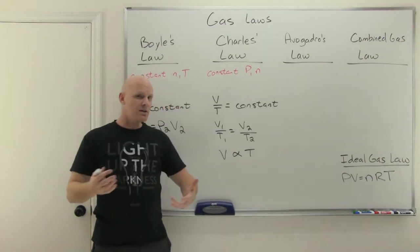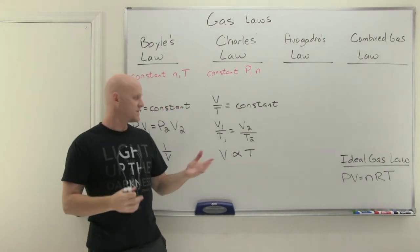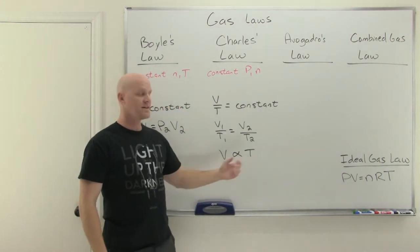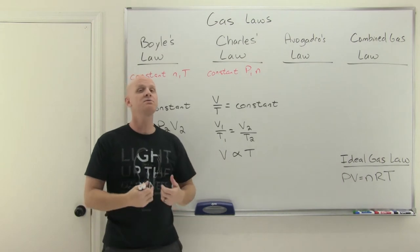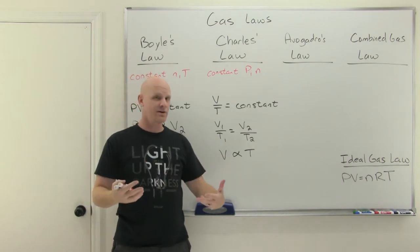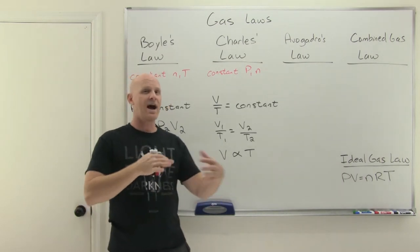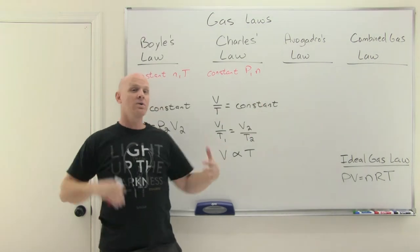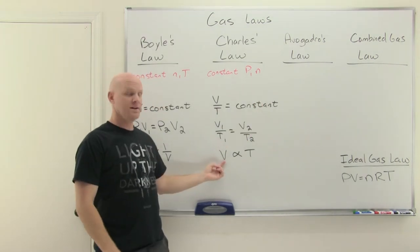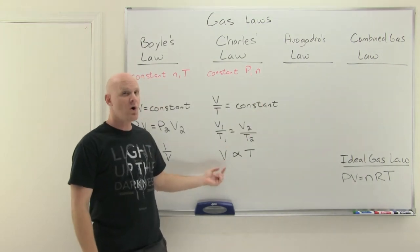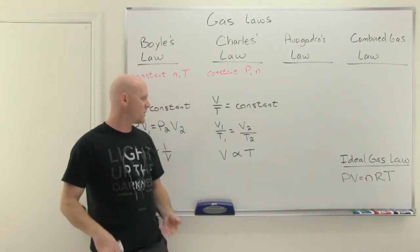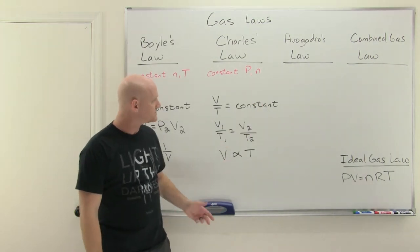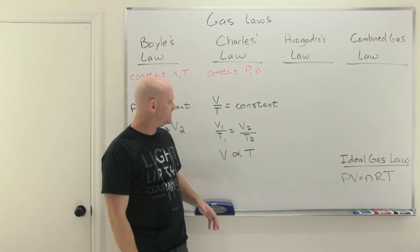At a molecular level, gas molecules move faster as the temperature goes up. As they move faster, they spread out, leading to a larger volume. That's kind of where Charles' law comes from at a molecular level.